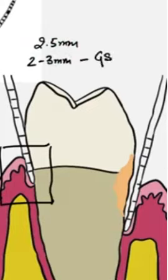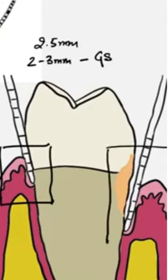Whereas if the markings of the probe exceed 3 mm, then we can say that there is some kind of pathology associated with it, and we give it a term called the periodontal pocket.